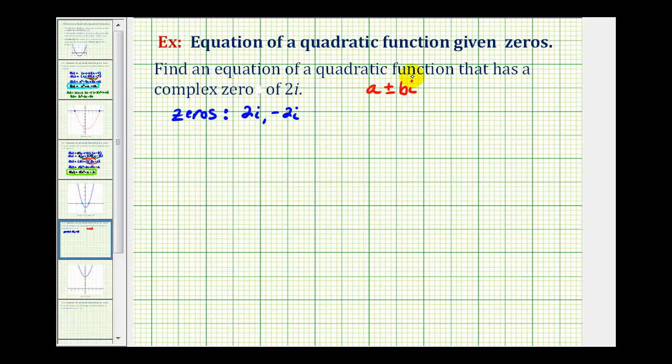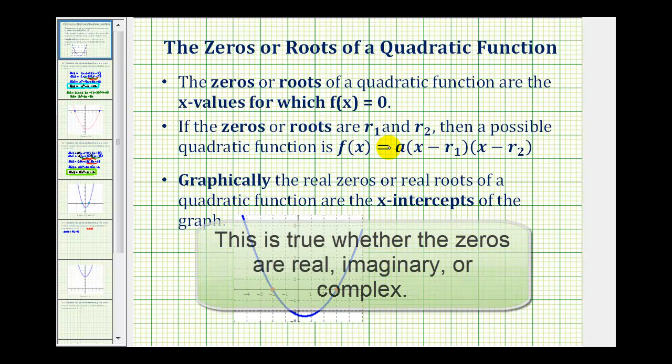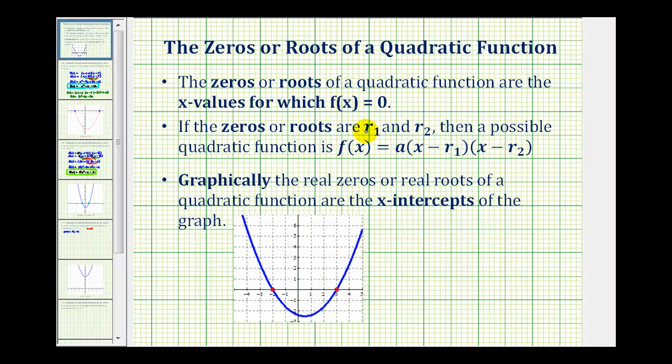When given the zeroes of a quadratic function, it gives us information about the factors of the function. For review, the zeroes or roots of a quadratic function are the x values for which f(x) equals zero. If our zeroes or roots are r₁ and r₂, then the quadratic function must equal a constant a times a factor of (x - r₁) times a factor of (x - r₂), where r₁ and r₂ are the given zeroes.